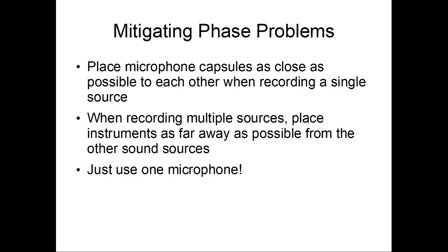You can also have a problem when recording multiple sources. If you have a guitar amp and bass amp next to each other, and the bass bleeds into the guitar mics when you combine them, you can also have phase problems that way. The best way to deal with that is to try and separate them completely in different rooms. If you can't, put them as far apart as possible, and even better, put a partition between the two — basically a makeshift wall — to get some separation so they don't bleed into each other.